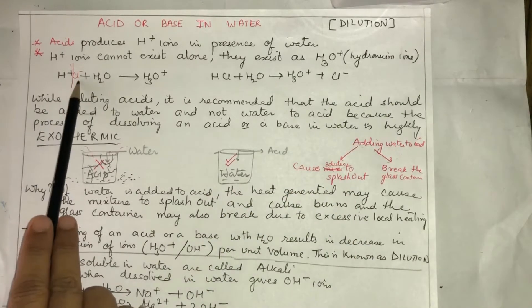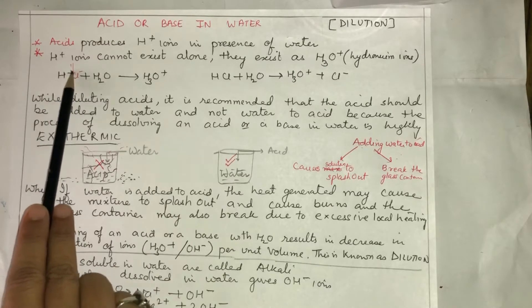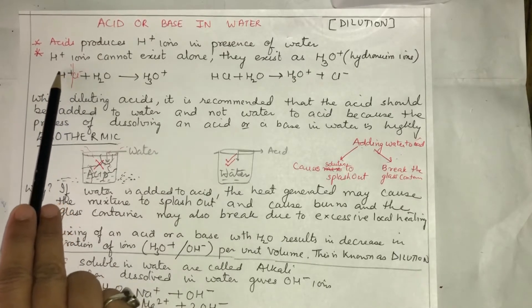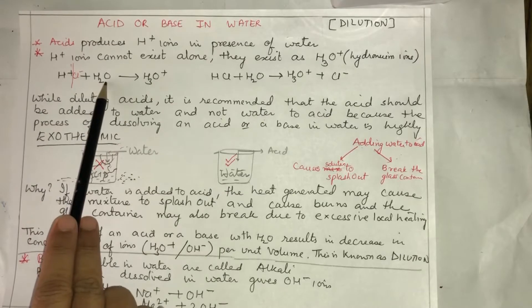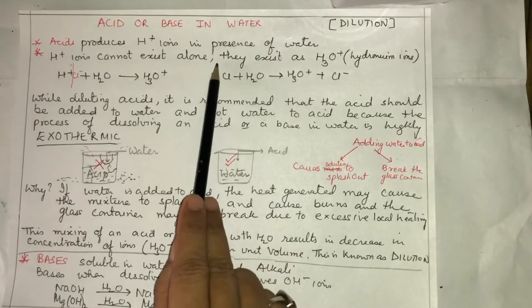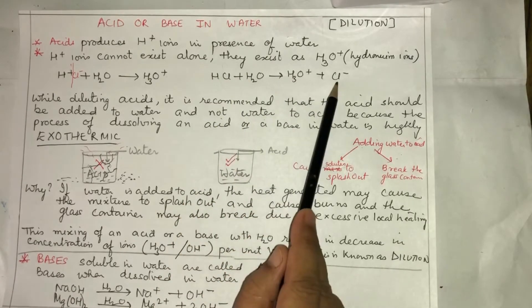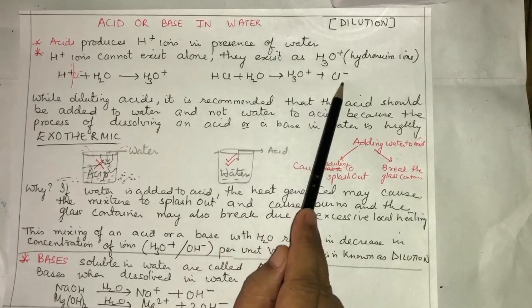Suppose you have HCl - when it breaks, it breaks into H+ and Cl-. This H+ combines with H2O to form H3O+. So HCl, when broken, gives H3O+ and Cl- ions.